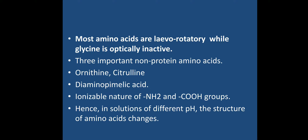Apart from the 20 major amino acids found in proteins, there are three important non-protein amino acids: ornithine, citrulline, and diaminopimelic acid. Ornithine and citrulline are responsible for the synthesis of urea, while diaminopimelic acid is mainly found in the cell wall of bacteria.